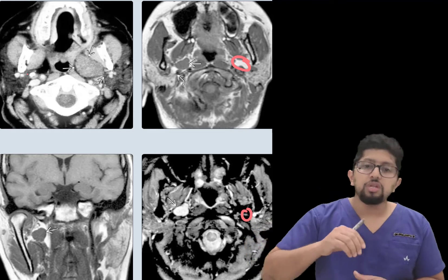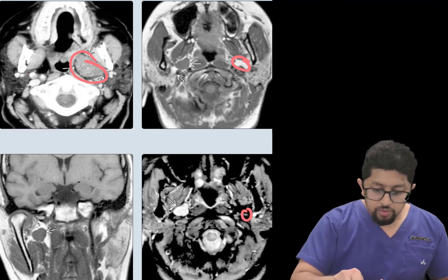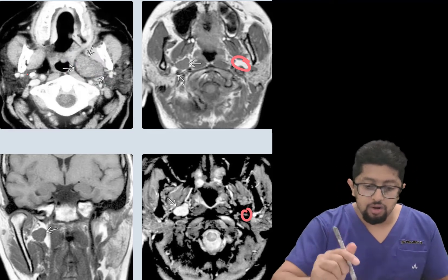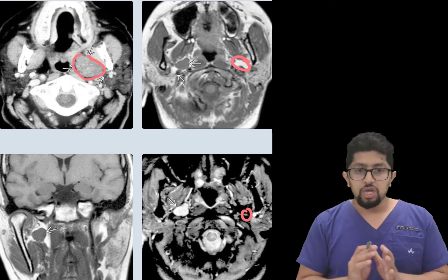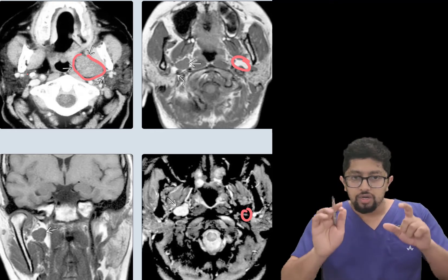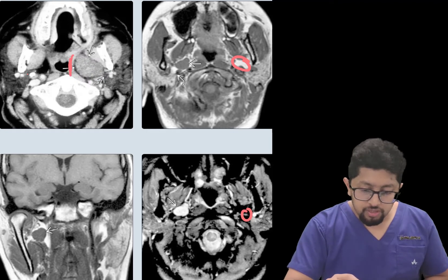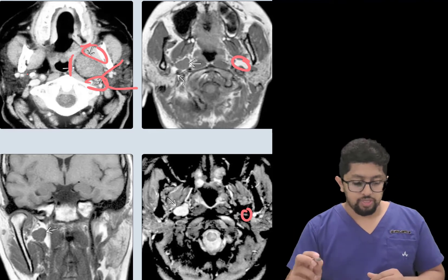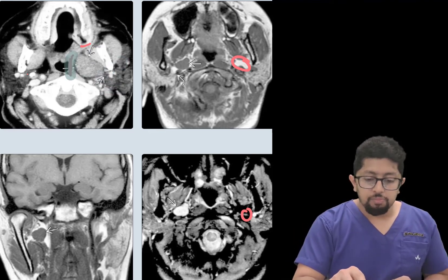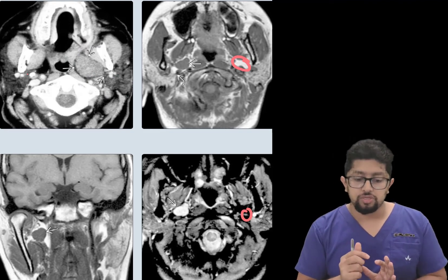When there is a lesion within the parapharyngeal space, it will have parapharyngeal fat surrounding it. We can see a hypointense line surrounding this lesion, which demarcates it from the surrounding structures — separating it from the pharyngeal mucosal space, the muscles of mastication, the parotid gland, and the carotid space. This fat helps identify the lesion as separate from all other spaces.